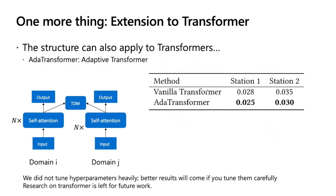One more thing. Our method does not limit to RNN models, but to transformer models. For example, we can use that structure to apply to transformer to get a model called AdaTransformer, which stands for adaptive transformer. It is very simple to add the TDM module to the transformer through the self-attention. We can see that without heavily tuning parameters, our method gives better performance than the vanilla transformer. Research on transformer is left for future work.